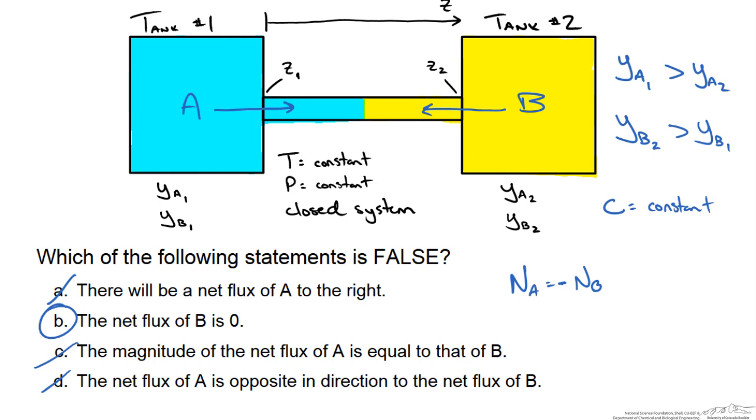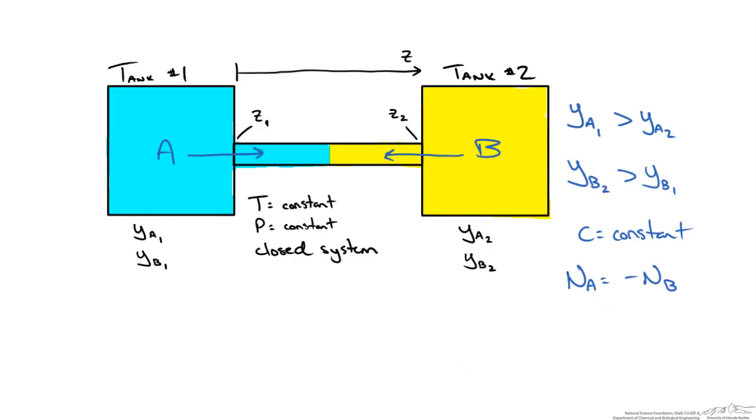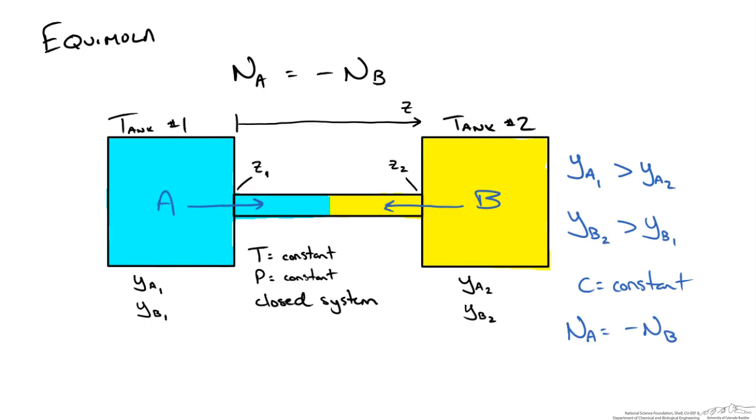Now this special case where we have the net flux of A equal and opposite to the net flux of B in a closed system is called equimolar counter diffusion or EMD for short.